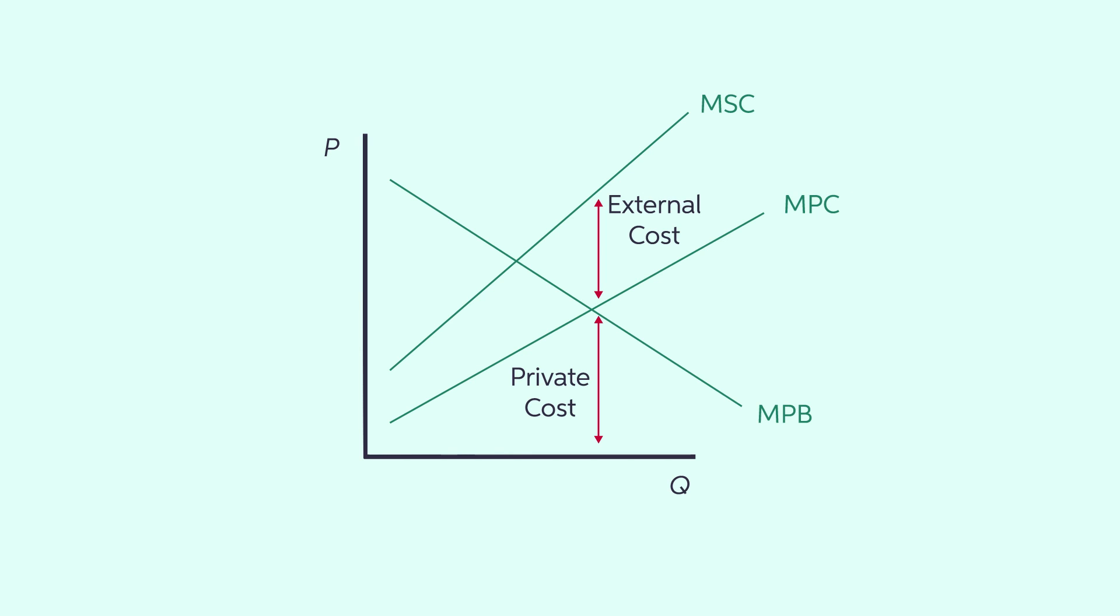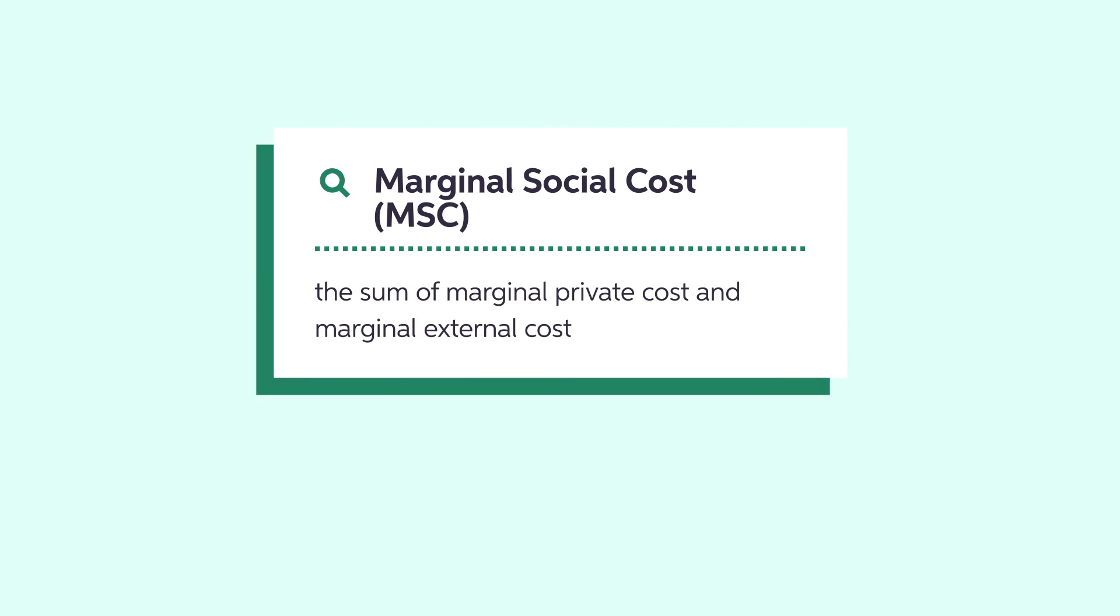However, society must pay the costs of cleaning up this toxic waste. This means society's production costs are external to each producer's costs of producing blue-jeans. The MPC and the external cost to society can be summed to create the marginal social cost, or MSC, of blue-jeans production. Social costs are the sum of private and public costs.